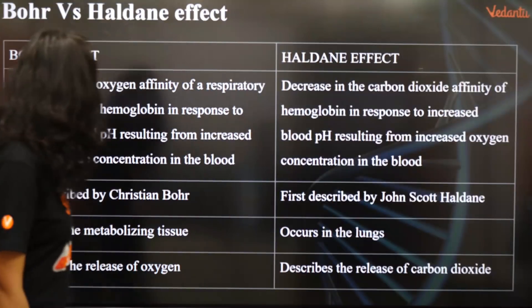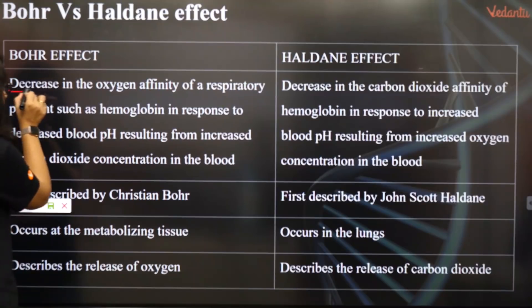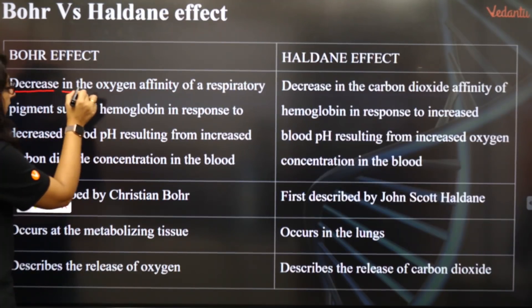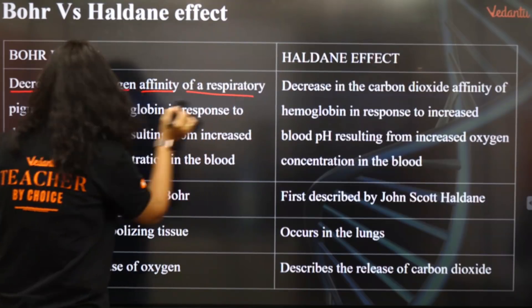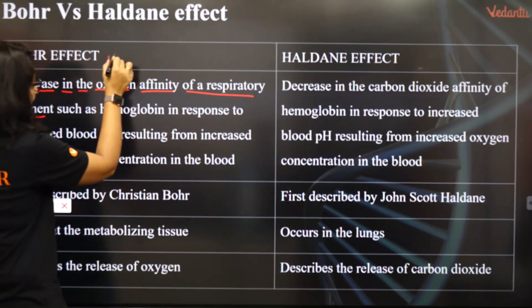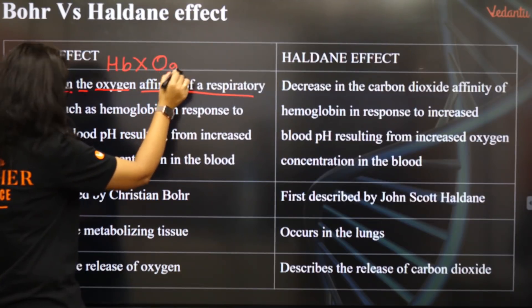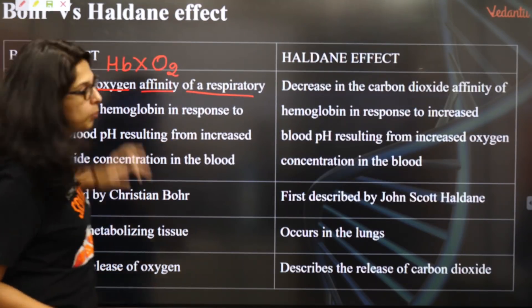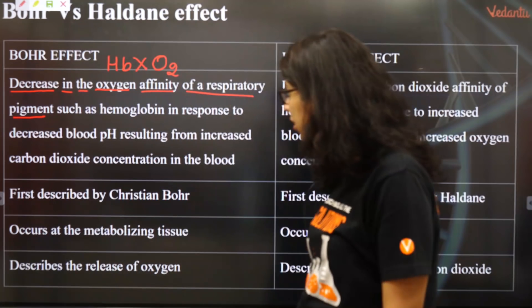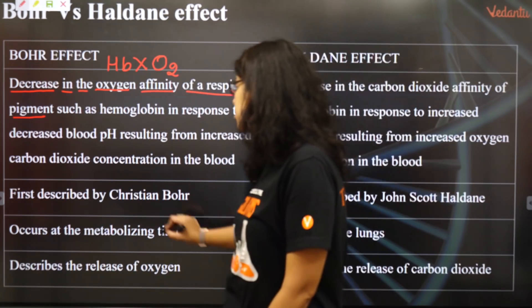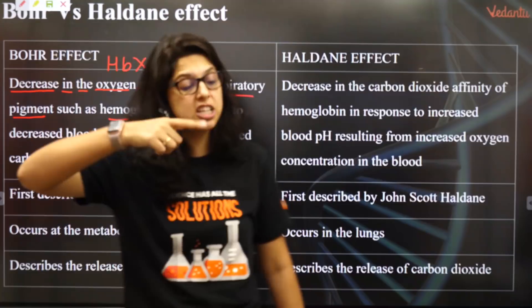Let's do the Bohr effect. The Bohr effect says that there is a decrease in the oxygen affinity of a respiratory pigment — that means hemoglobin and oxygen have a falling out. So if hemoglobin starts to hate oxygen, that is your Bohr effect. The pigment is hemoglobin, in response to decreased blood pH.